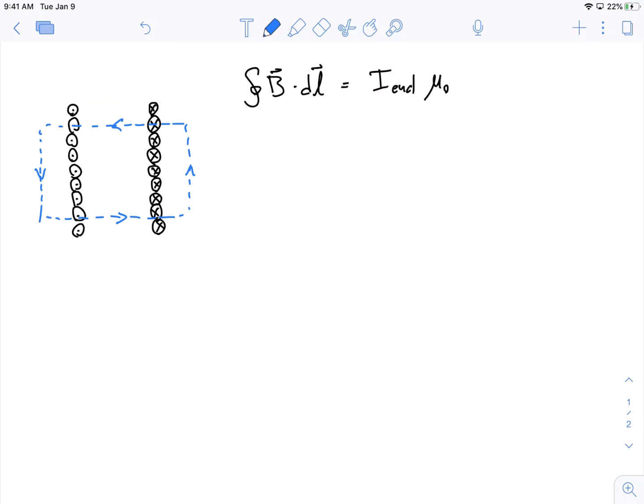So, the first thing that's interesting about this is that the current enclosed is actually zero. For every little piece of current that is coming through this loop out of the page on the left-hand side, there is the same current coming into the page on this side. So, for this loop, my I enclosed is equal to zero.